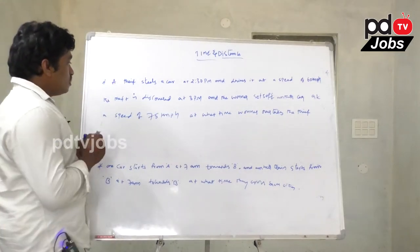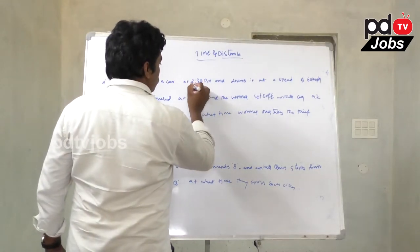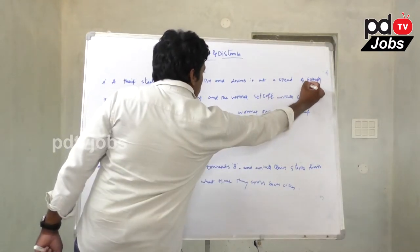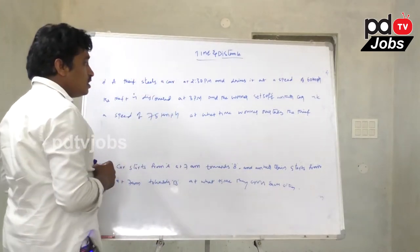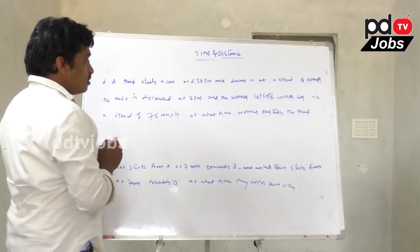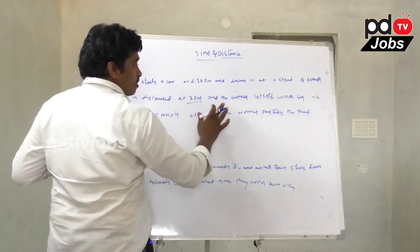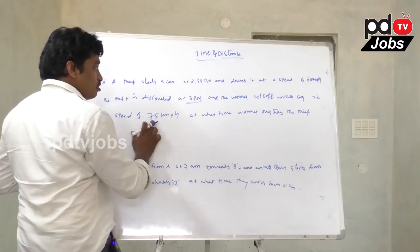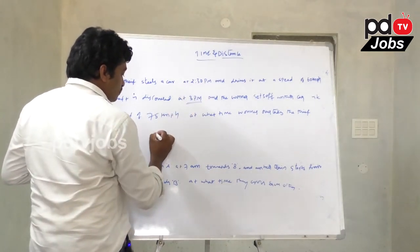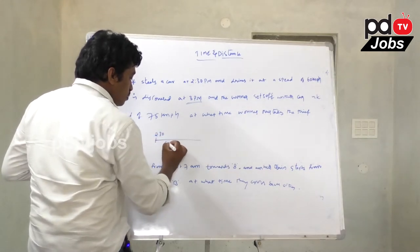Here is the question setup. The thief steals a car at 2:30 PM and drives at a speed of 60 kmph. The theft is discovered at 3 PM, and the owner's car will travel at 75 kmph.